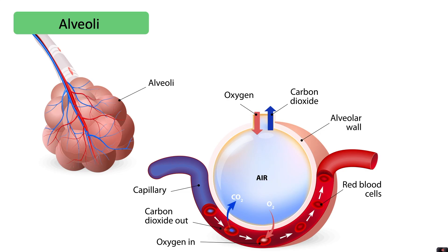We'll start by looking at how oxygen moves from the lungs into our blood. Our body needs oxygen. When we breathe in, one of the gases in air is oxygen, and that oxygen will be in a high concentration in the air, so it will diffuse across the alveolar wall into the capillary. There it binds to haemoglobin within red blood cells, and the red blood cells take it all around the body to wherever oxygen is needed.